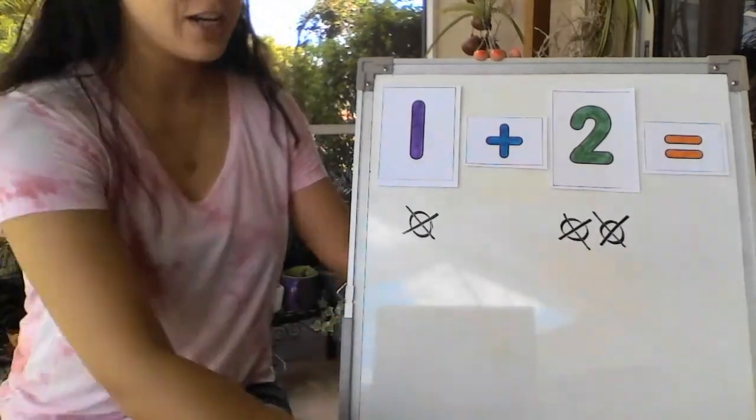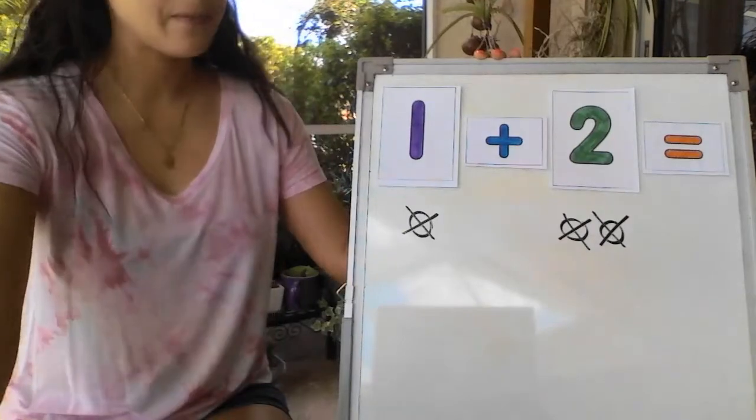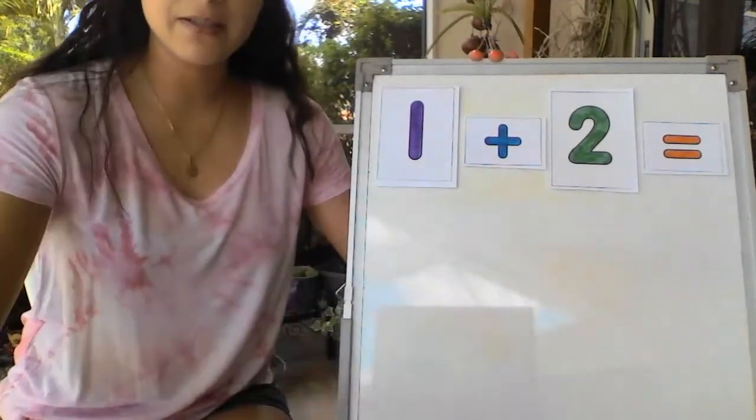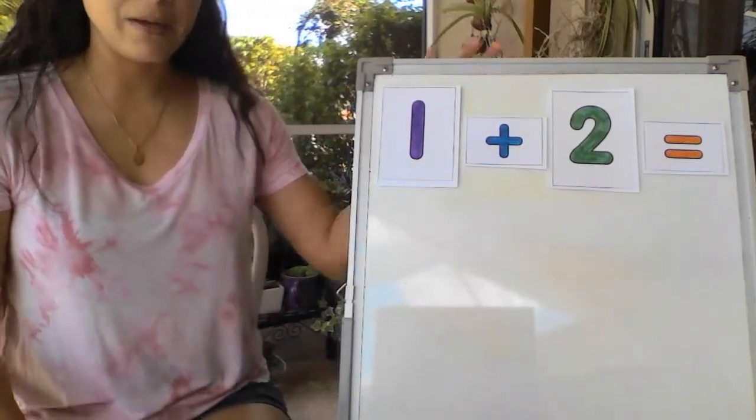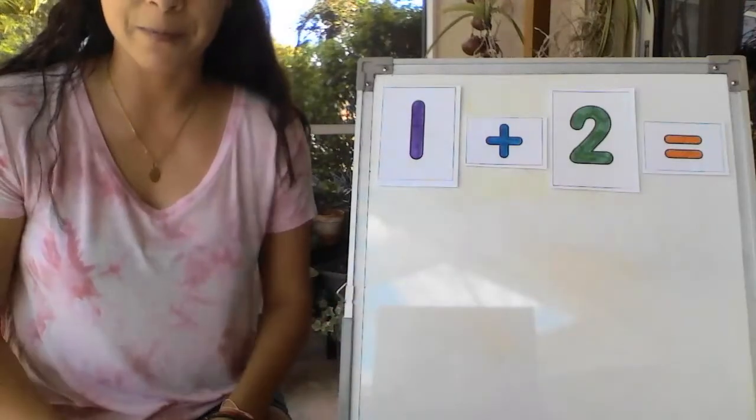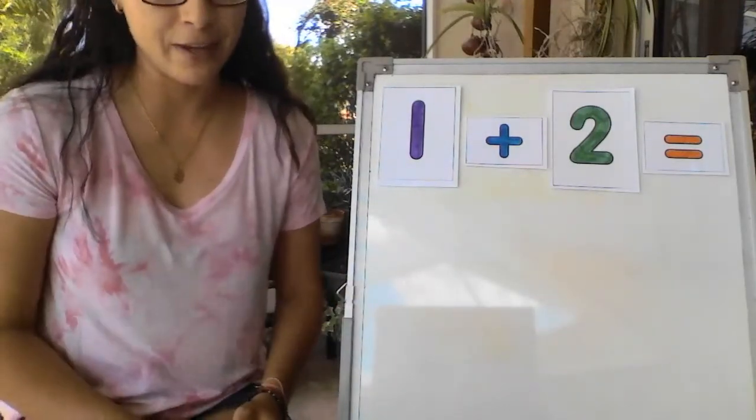The last strategy is using manipulatives. Now remember manipulatives can be counting bears, can be M&Ms, it can be rocks, it could be anything that you can grab so that you can move around to figure it out. What I have are counting vehicles.